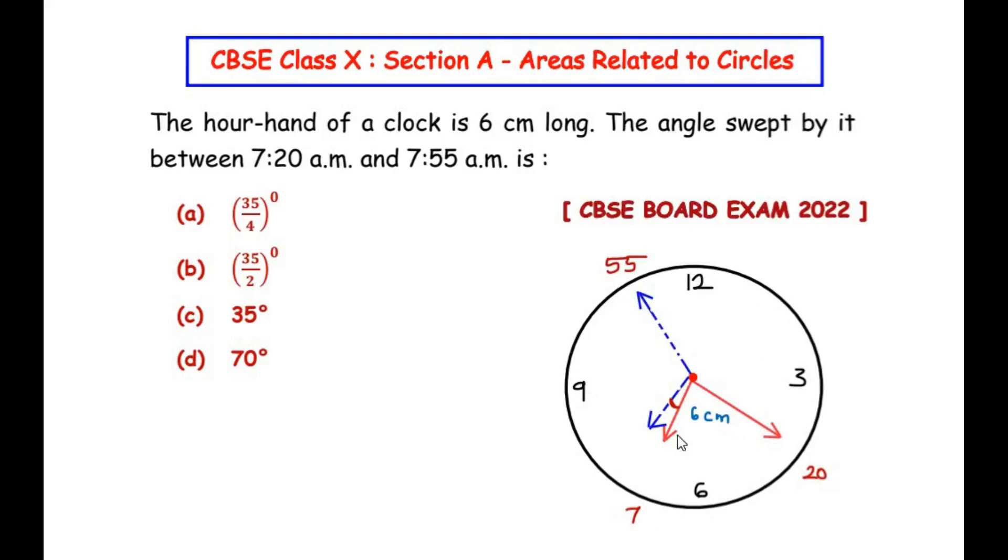Now focus on the lines which are red in color. The short line represents the hour hand and the long red line represents the minute hand. Here the length of the hour hand is given as 6 centimeters, so we have marked the red line as 6 centimeters, and the clock is pointing to 7 hours and 20 minutes.